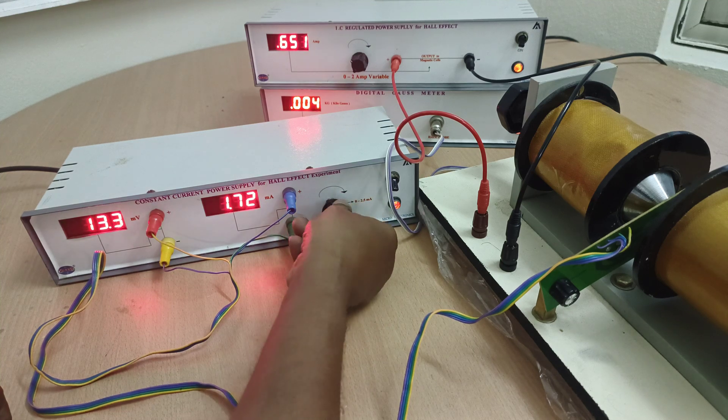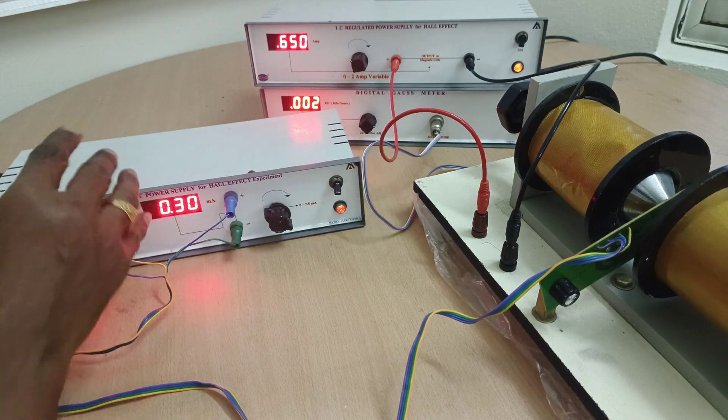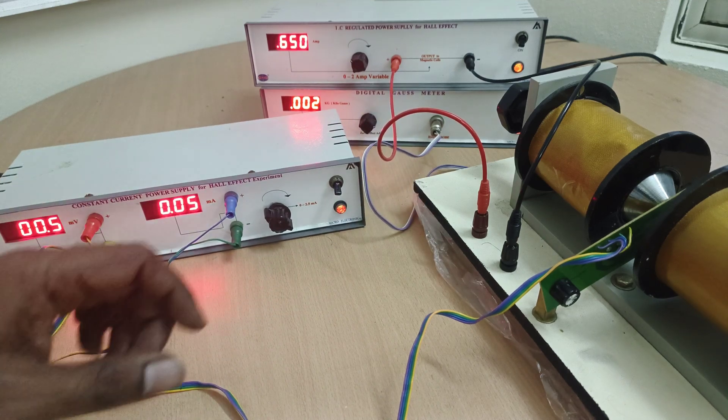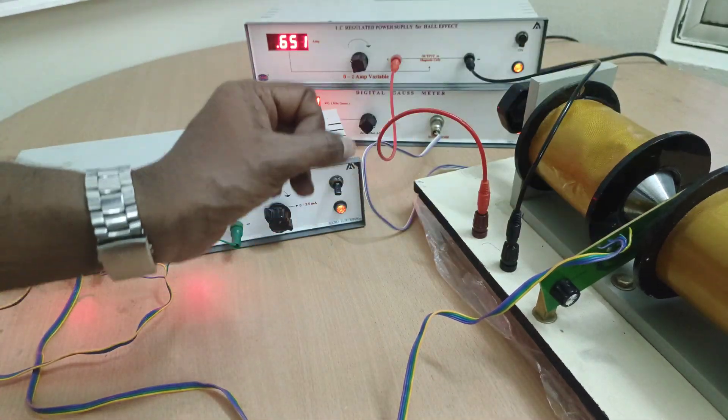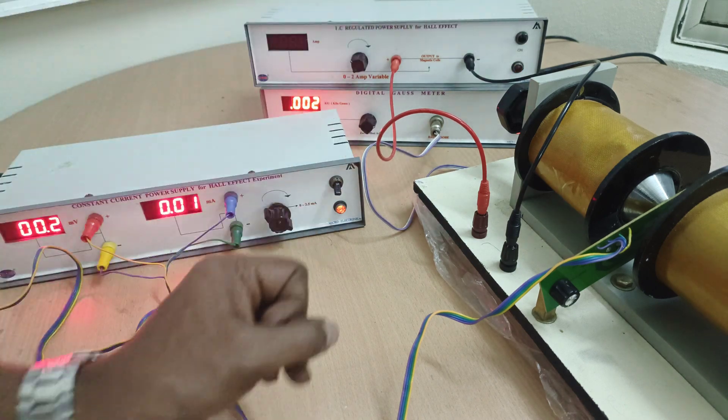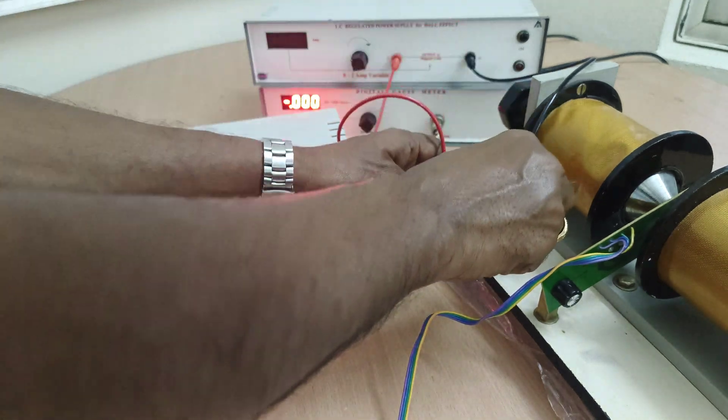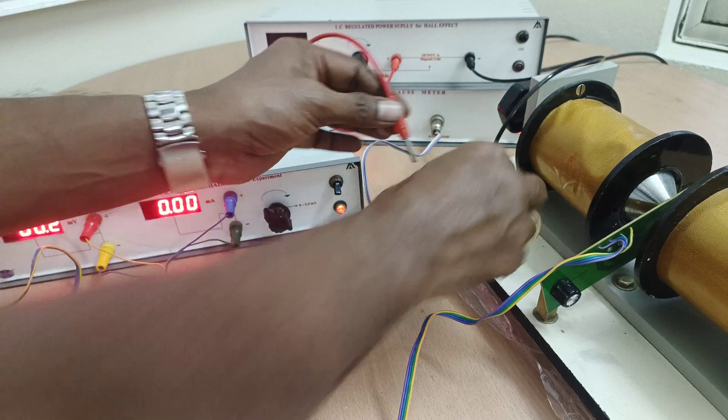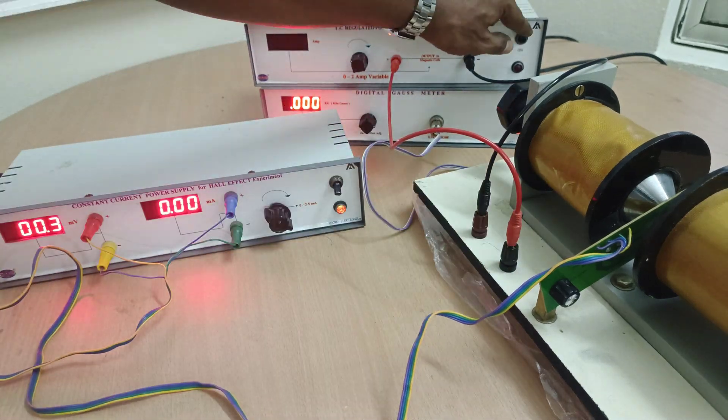Once it is completed, again make it zero and change the polarities to change the direction of the magnetic field. Switch off the regulated power supply, change the polarities, and switch on again.